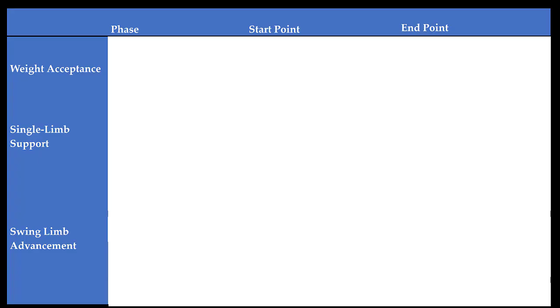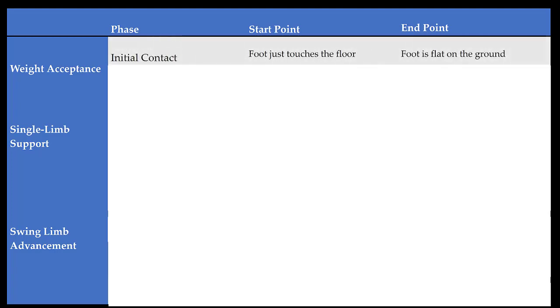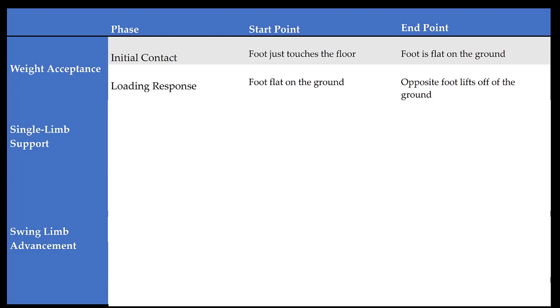Now we can turn our attention to the gait cycle. Gait is a cyclic task, meaning you can start your analysis anywhere within the gait cycle. We are going to take those three functional tasks — weight acceptance, single limb support, and swing limb advancement — and break them up into sub-phases. We will start with initial contact, which begins when the foot just makes contact with the ground and ends when the foot is flat on the ground. The next phase within weight acceptance is loading response, which starts when the foot is flat on the ground and ends when the opposite foot lifts off of the ground, signaling entry into single limb support.